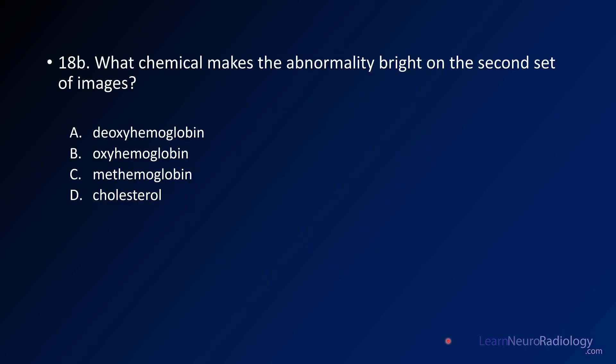Your second question is: what chemical makes the abnormality bright on these images? Here you realize you are probably talking about hemorrhage, although cholesterol is kind of thrown in as a choice.